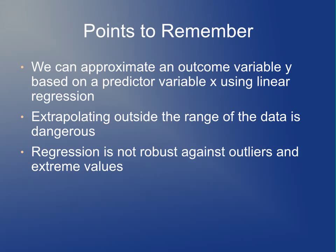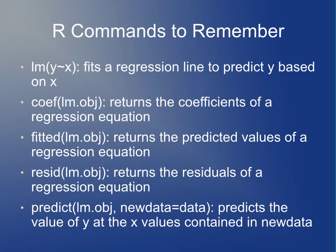The key things to remember today: using regression, you can predict an outcome variable Y based on a predictor variable X. Extrapolating is dangerous, and regression is not robust against outliers. R commands to remember: LM to fit a regression object; coef, fitted, and resid to extract various numbers from the model; and predict to make predictions based on the regression model.